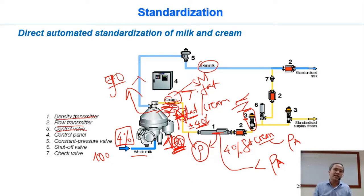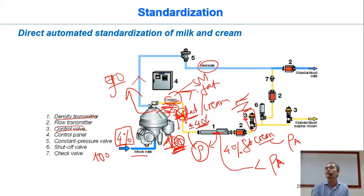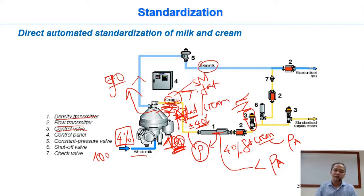So again, standardization is a continuous process where they adjust the fat content continuously based on the measurement of the density of the cream. Because if you measure fat directly, it takes a long time to measure and then to adjust — it's too slow to do continuously.